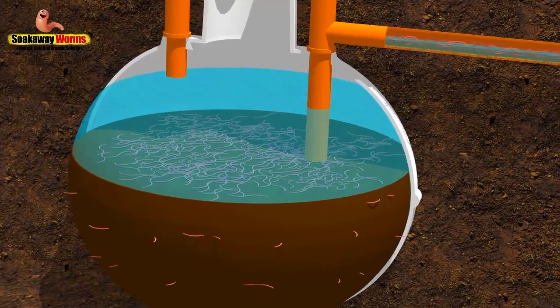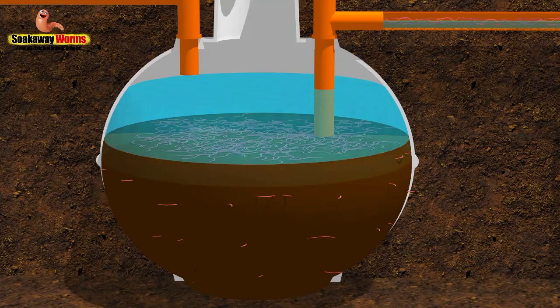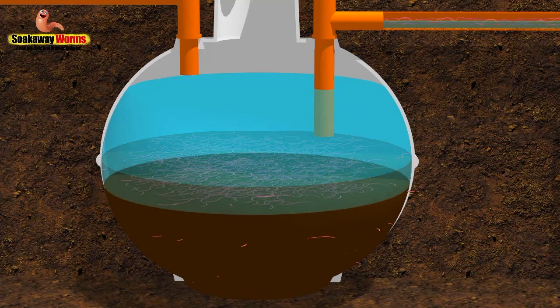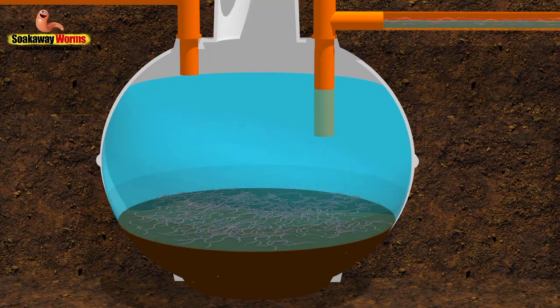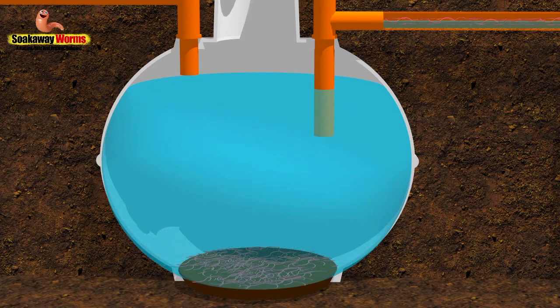Soakaway worms will also save you hundreds of pounds in septic tank emptying costs because they eat all the fat and the grease and the sludge in the septic tank. You never need to get it emptied again because there's no sludge left to suck out.